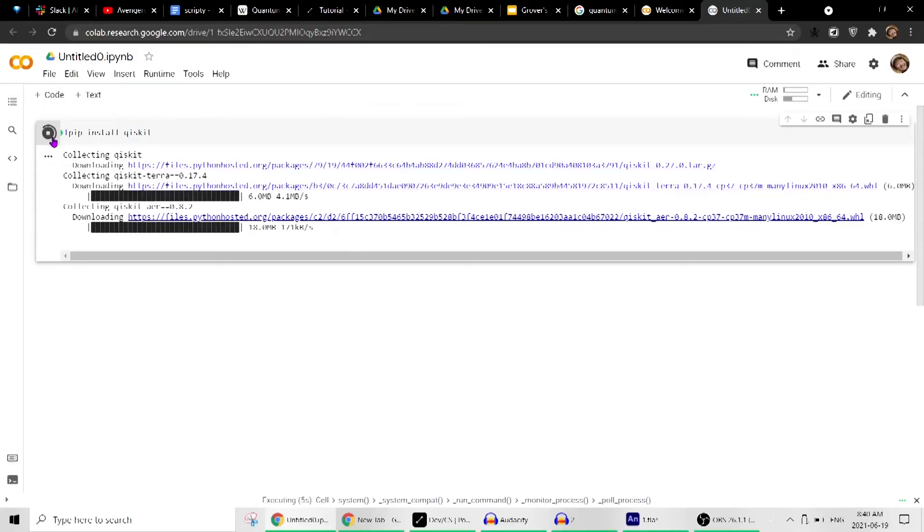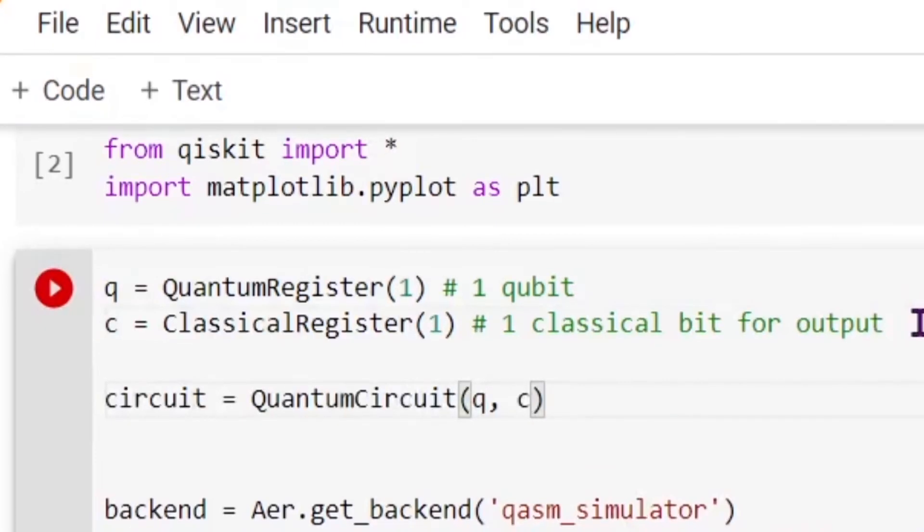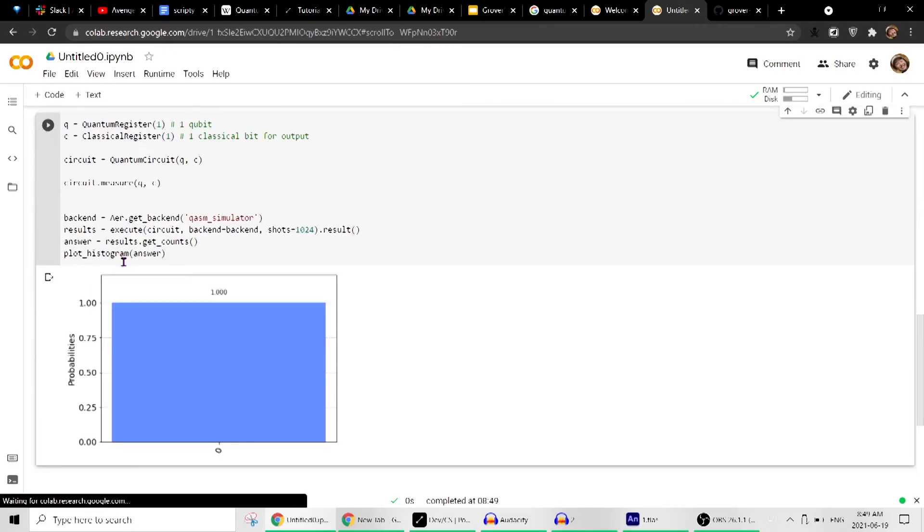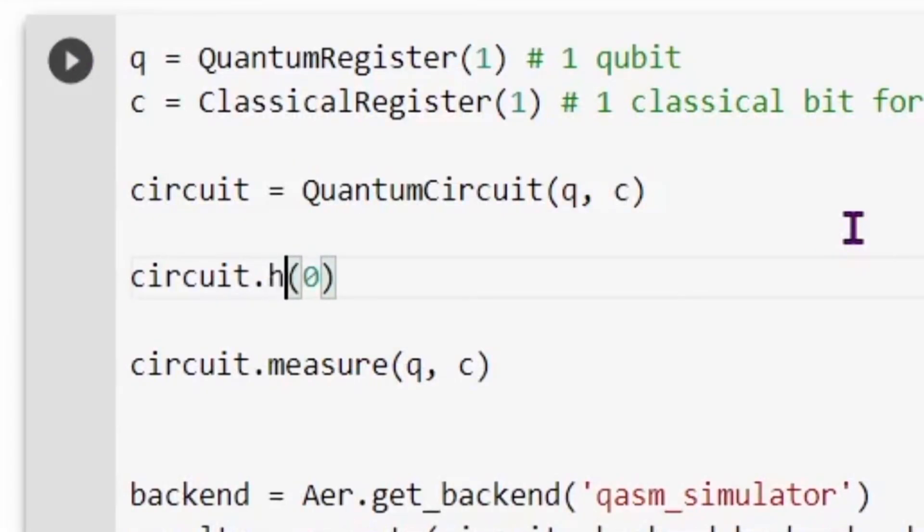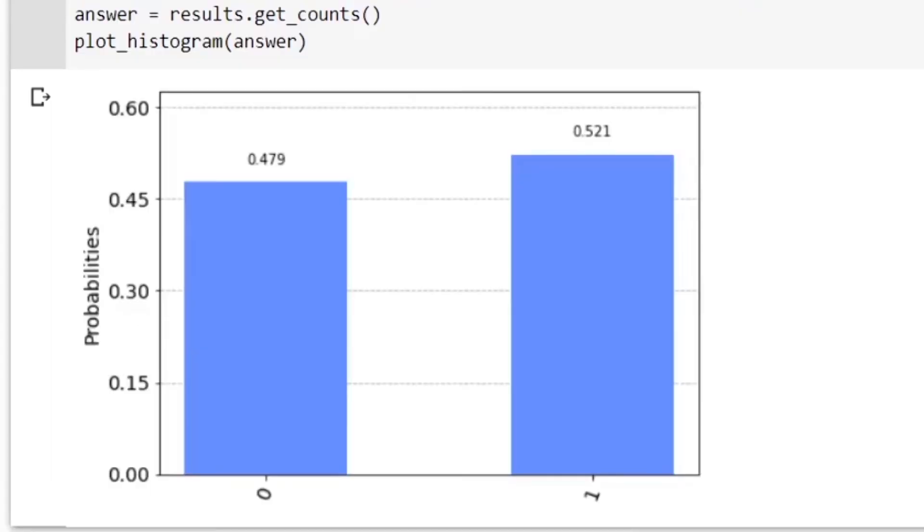Go to Qiskit. Create a quantum circuit with 1 qubit. Measure it. And you can see this qubit is initiated in the 0 state. If we put an x gate, it flips to a 1. And if we put a Hadamard, it measures to 0 and 1 equally.